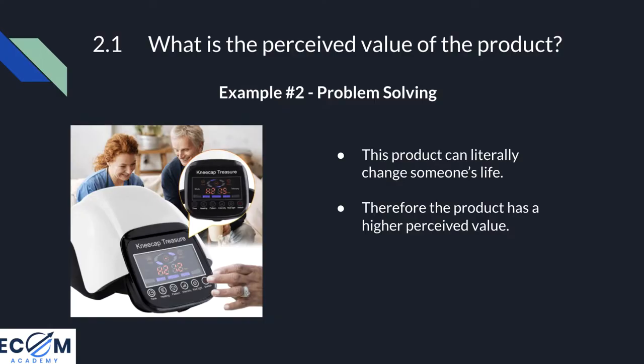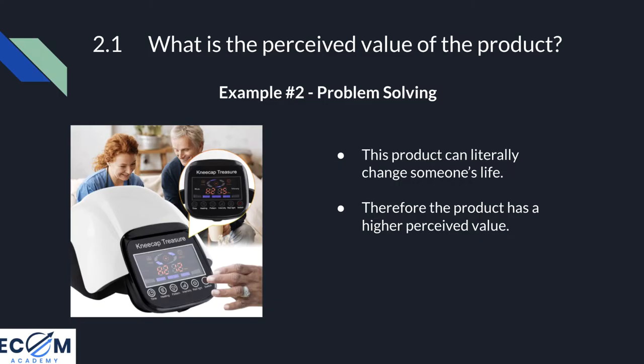When it comes to perceived value, branding can be a factor as well. Example number two is problem solving. The bigger the problem you can solve for somebody, the more they're willing to pay for it. The product on screen is a heated knee massager — this can literally and drastically change somebody's life for the better, so it has a significantly higher perceived value and someone would be willing to pay a lot more for it. It's really important that you target the right audience. A young person not experiencing knee pain would pay significantly less versus somebody in their 70s who is an ex-tennis player experiencing knee pain daily.